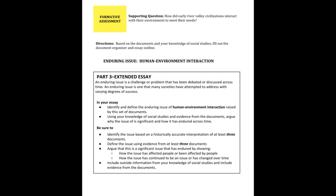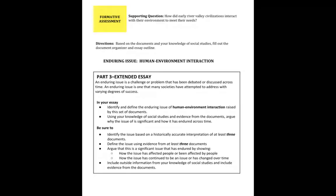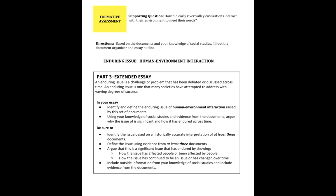Be sure to identify the issue based on a historically accurate interpretation of at least three documents. They will always give you five; you must use at least three of them. You can use more, but let's stick with three for now. You have to define the issue using evidence from three documents, argue that it's significant, show how it has affected people, and use outside information along with evidence from the documents.